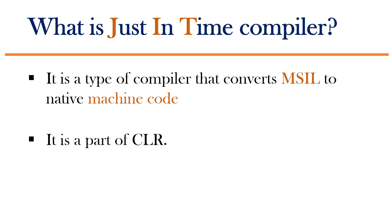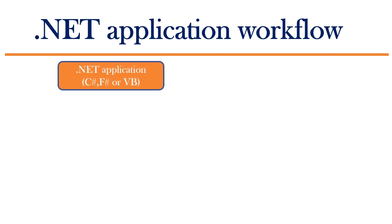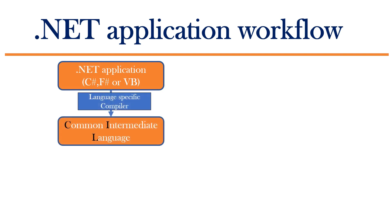Let's go back and understand the workflow of .NET application so that it becomes easier to understand Just-In-Time Compiler. As you all know, we can write .NET application using different languages like C-sharp, F-sharp, or VB.NET. When we build our application, the language-specific compiler converts our high-level language code to common intermediate language code. We also call this as Microsoft Intermediate Language Code or you can simply call it as intermediate language.